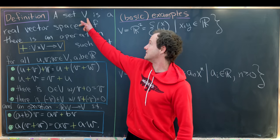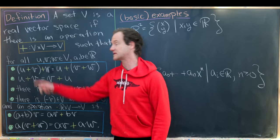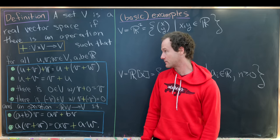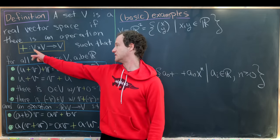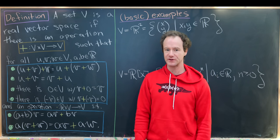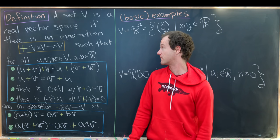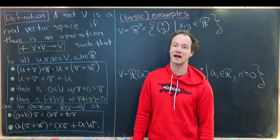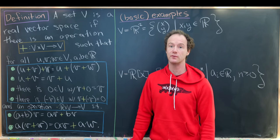So a set V is a real vector space if there is an operation, which we'll call plus — I've colored it yellow just to distinguish it from the addition within the real numbers. This is the addition within the vector space, so this allows you to take two vectors and add them, or do vector addition. This vector addition has to satisfy four axioms, and these four axioms actually make the vector space an abelian group under this vector addition.